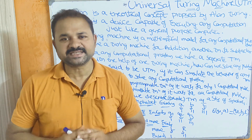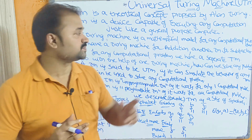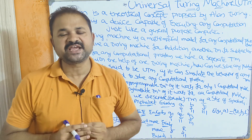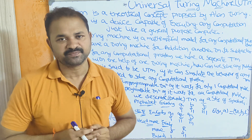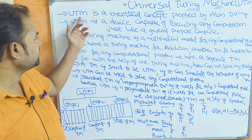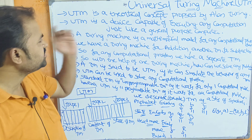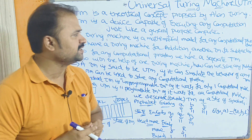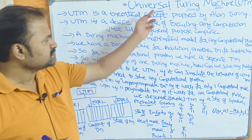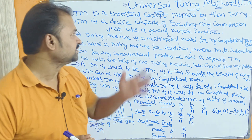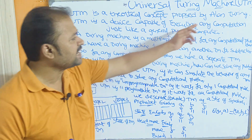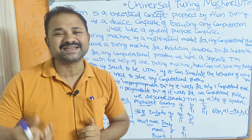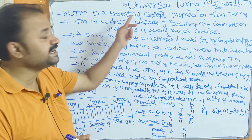Now let us discuss the Universal Turing Machine, in short UTM. Universal Turing Machine is a theoretical concept proposed by Alan Turing. This concept was introduced by Alan Turing in the 1930s.